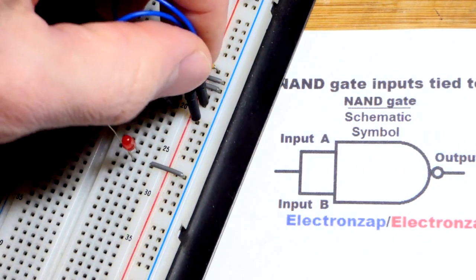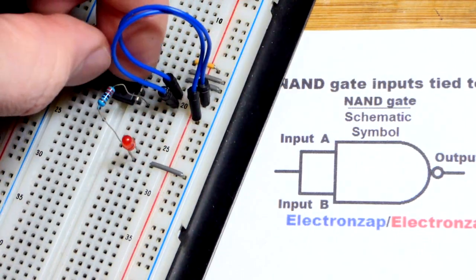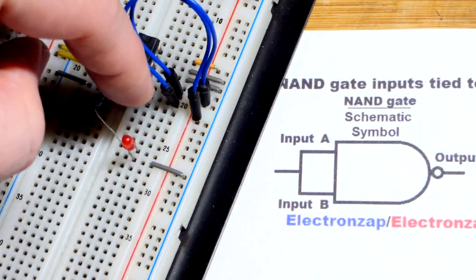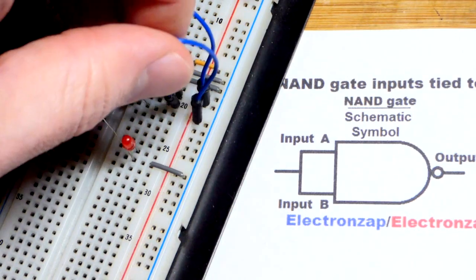Now the output is low. So we have a high 5 volts at both inputs. We have a low 0 volts at the output. Pretty straightforward.